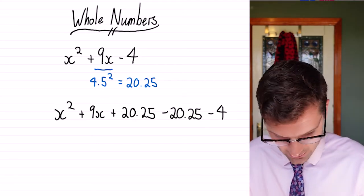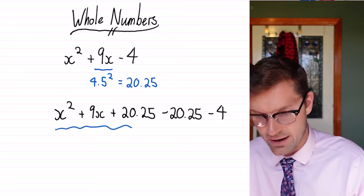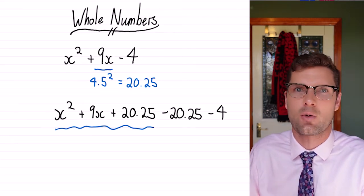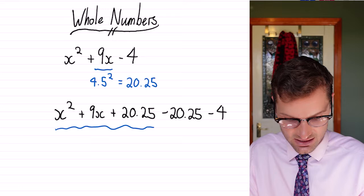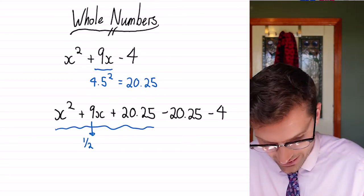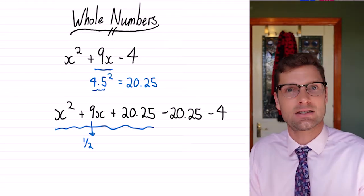Now you've got to write this whole first bit as a perfect square. You might be thinking, well, I've got no idea what the square root of 20.25 is. Don't stress, it's always half of this middle term. So whatever this number is, what you've halved and then squared,